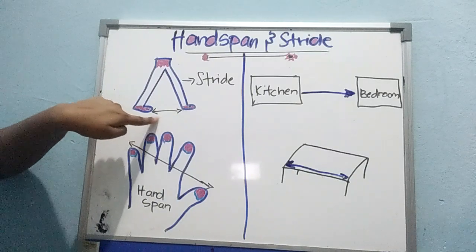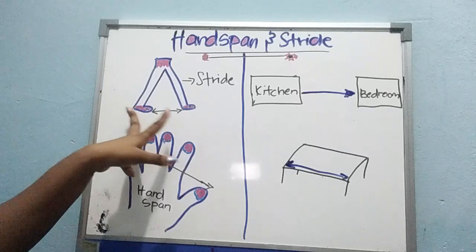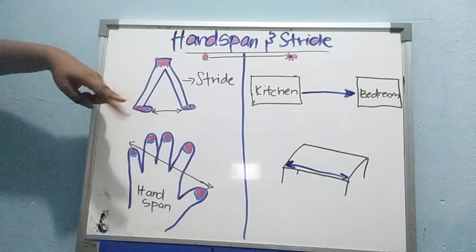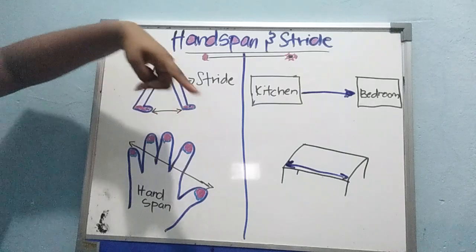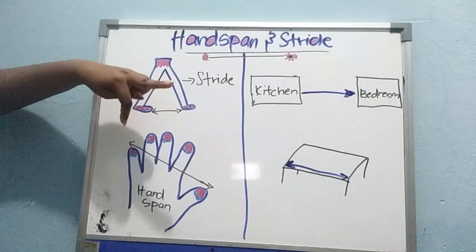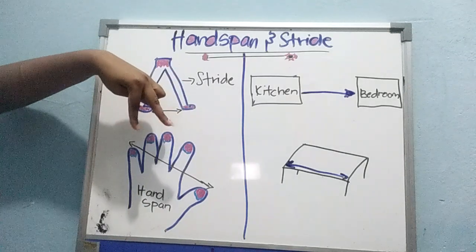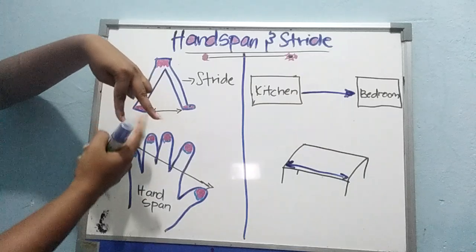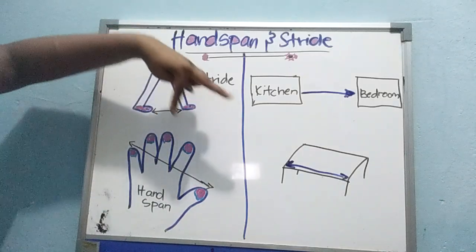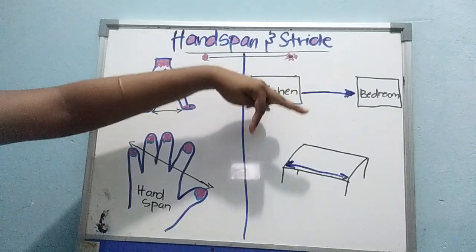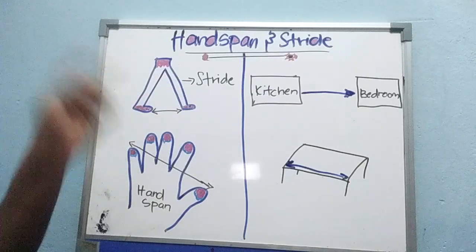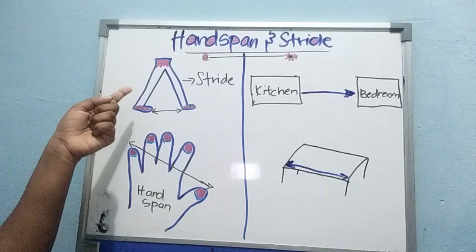What is this? Stride. So the gap between this leg and this leg — when you walk. Of course when you walk like this, so when you start from here and walk like this, there's a gap. This gap is called stride. Walk. How many strides? You have to walk and check. Do you understand stride now?